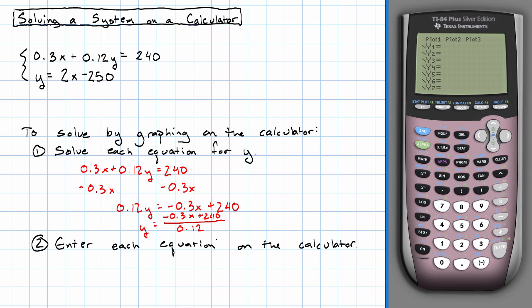First equation, I've got negative 0.3. I'll put in the 0 to make it easier to read, 0.3x plus 240 all over 0.12. Second equation, I've just got 2x minus 250.